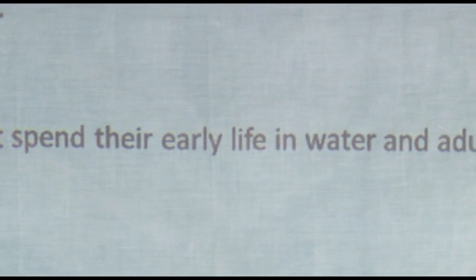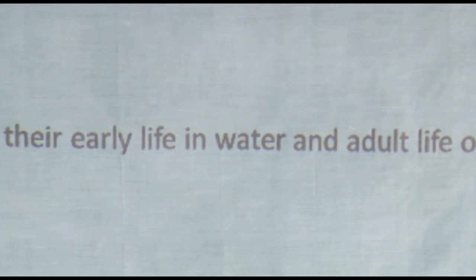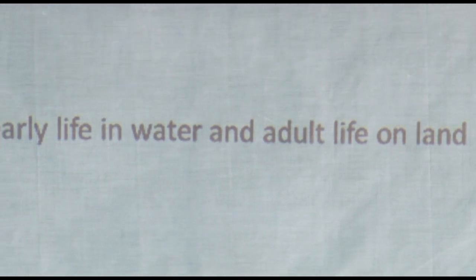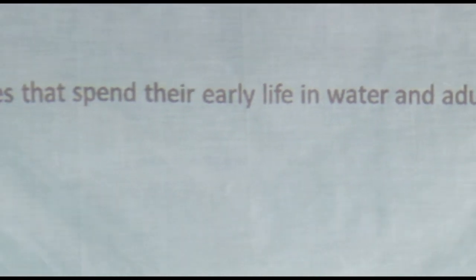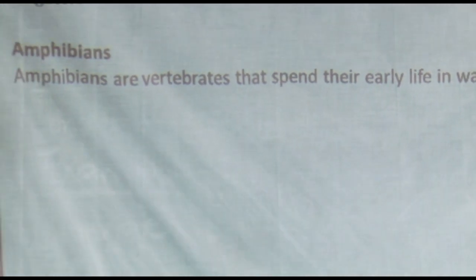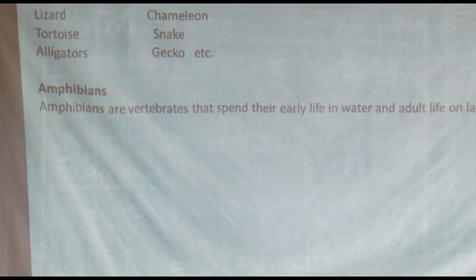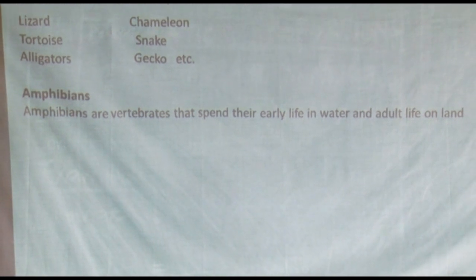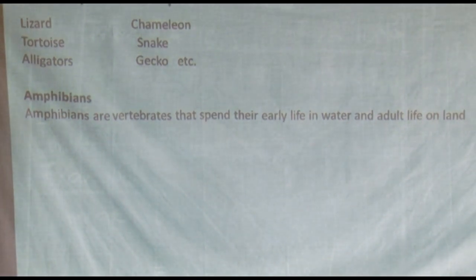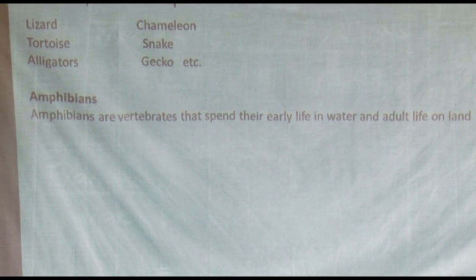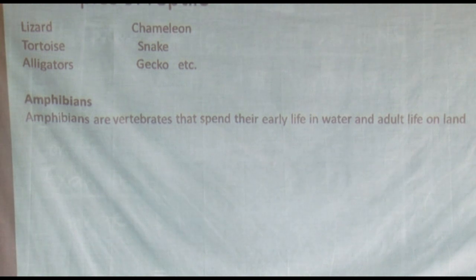Amphibians also have their special features which can help us identify them. Amphibians are vertebrates that spend their early life in water and adult life on land. These animals, mainly when they are at an early age — which are called tadpoles — spend that life in water. As they grow, turning into frogs, toads, salamanders, and newts, they move on to land.